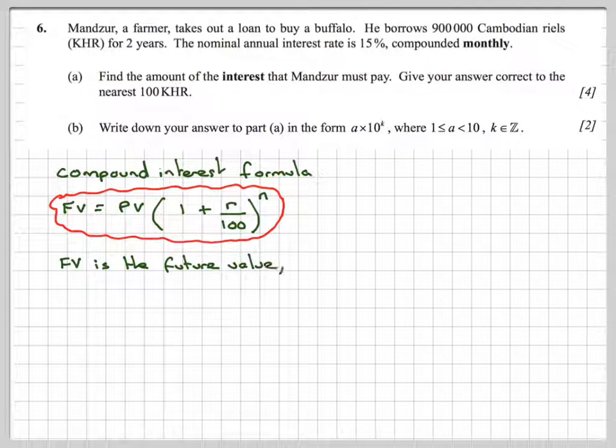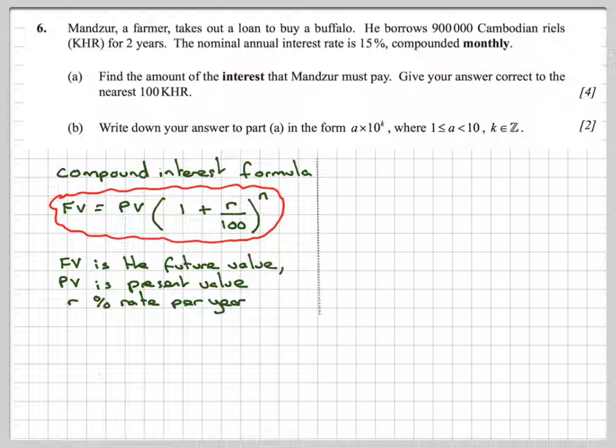That means there are going to be 12 compound periods per year. The future value is FV, the present value is PV, and r is the rate percent per year.